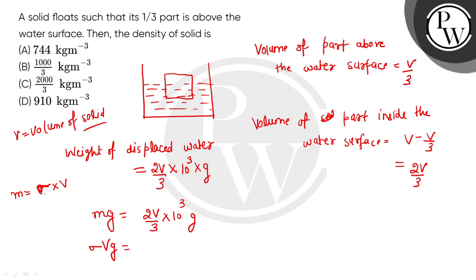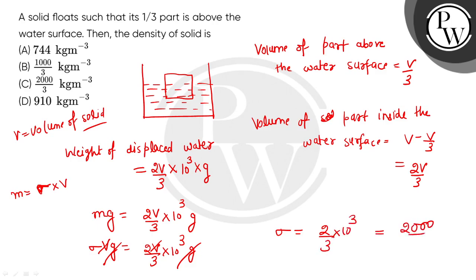So the density of the body will be 2/3 into 10³, which gives us 2000/3 kg/m³. That is the density of the solid, which corresponds to option C — option C is the correct answer.